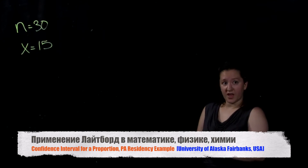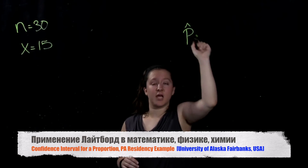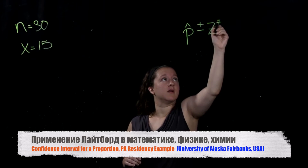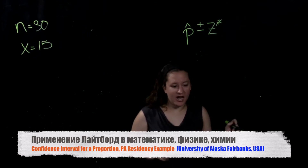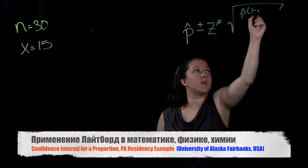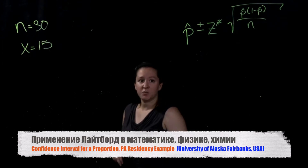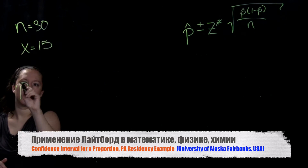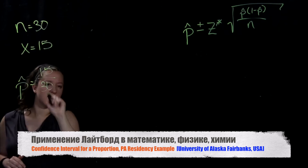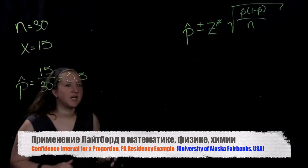The formula for constructing a confidence interval for a population proportion is p-hat — the sample proportion — plus or minus the z multiplier times the standard error, which equals the square root of p-hat times (1 minus p-hat) divided by n. We start by computing the sample proportion: 15 out of 30 students said yes, they're currently living in Pennsylvania, so my sample proportion is 0.5.